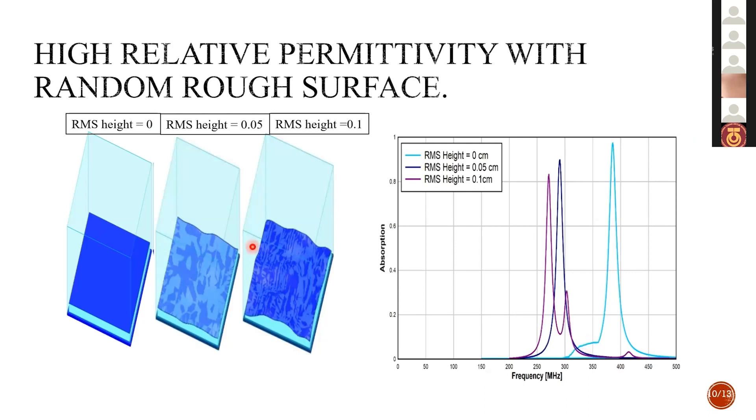Now another form of roughness is applied, a random rough surface. Here we have a regular patch, and here roughness with RMS height of 0.05, and here more roughness with RMS height equal 0.1. This figure will show us this result. The regular patch have a resonant frequency of 382. By applying the roughness, we have shifted the resonant frequency to 294, 244, and with applying more roughness in our patch resonator, we have more shifted resonant frequency and we have an absorption in 265 megahertz.